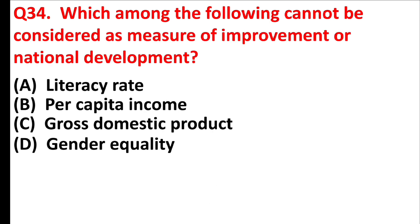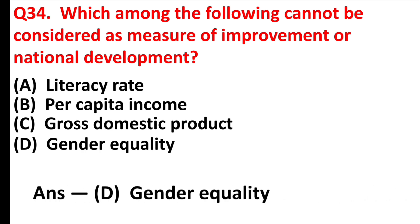Which among the following cannot be considered as a measure of improvement or national development? Answer is Option D: Gender Equality.